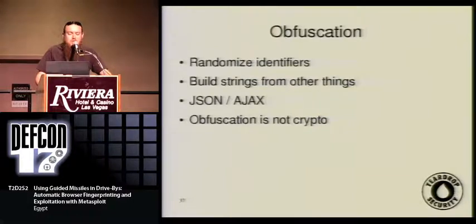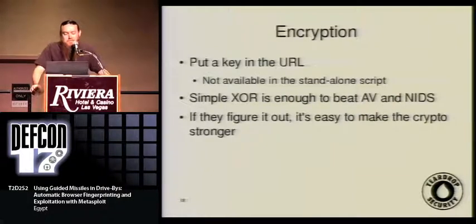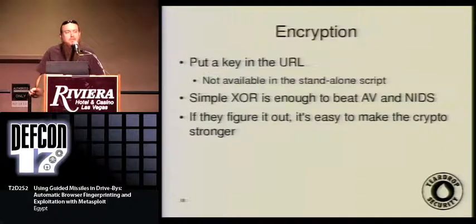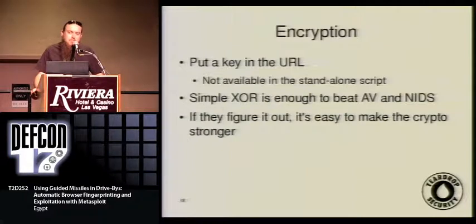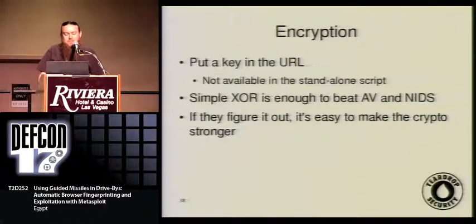Obfuscation is not crypto, but encryption is crypto. We can put an XOR key in the URL and reference it via JavaScript. So if somebody gets our evil JavaScript but doesn't save the URL it was downloaded from, they can't decrypt it. A simple XOR is enough to beat all the AVs and NIDS. And the best part is if they figure it out, it's easy to upgrade to RC4 or something better. The problem is this is sort of a DRM solution — we have to have the key on the client side so it can decrypt and run our payload — but I think that's okay.